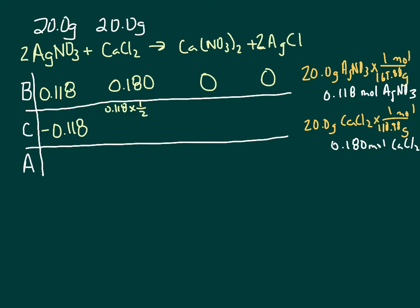So that is going to be 0.059 on there. And of course, we're using that up. So that's going to be a negative.